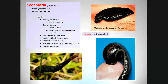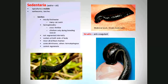Not all leeches are hematophagous — meaning they feed on blood. Some feed on decaying organic material. These organisms, unlike earthworms, cannot regenerate.